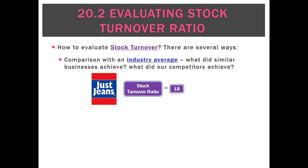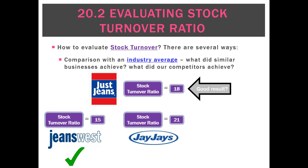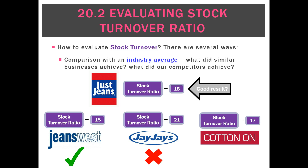Another way we can look at it is our industry average. Say our stock turnover ratio is 18 and we sell jeans. Is that a good result or a bad result? One way we could analyze that is by comparing to competitors: Jeans West is at 15, and we'd say that's a good ratio for us — we are turning over our stock on average three times more than our competitor. What about if JJ's is achieving 21? We'd say that's a negative result — they're turning over their stock more often than we are. Cotton On is 17, so we'd say that's a good result — we are turning over our stock more frequently, once more each period.